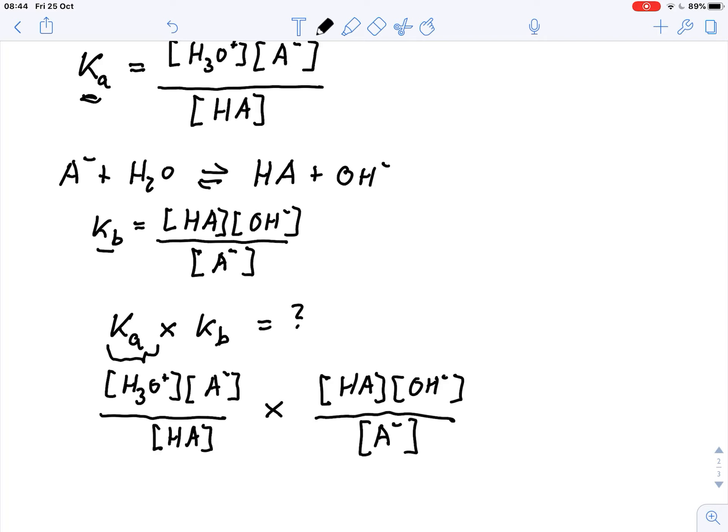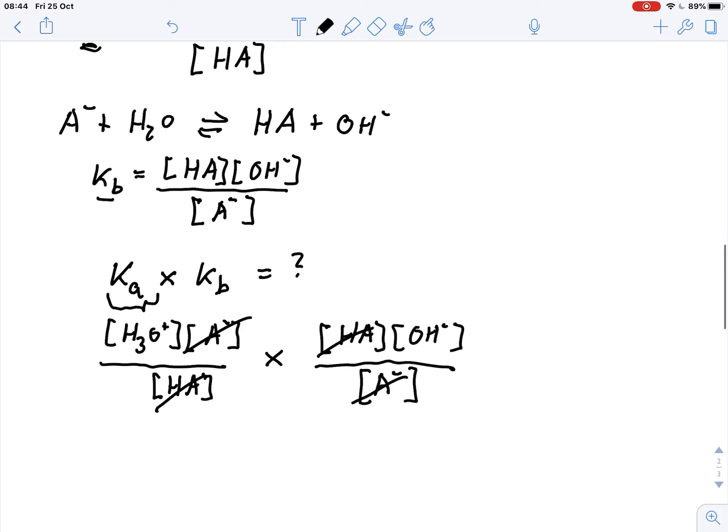And what I see now is that actually the HA's cancel out, A minus cancels out. And all I have left is Ka times Kb is the concentration of the protons times the concentration of OH minus.